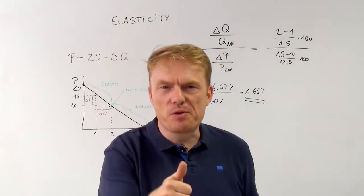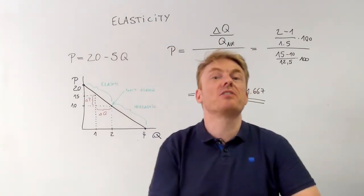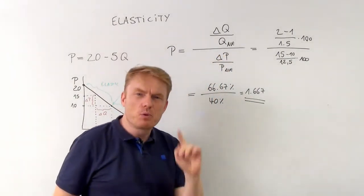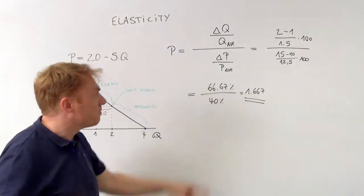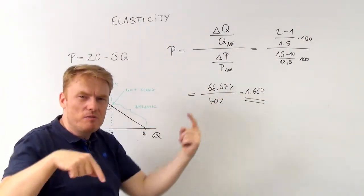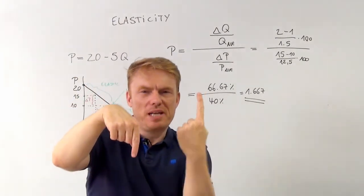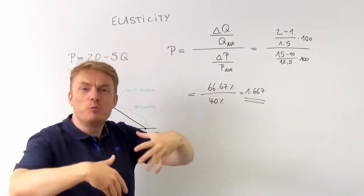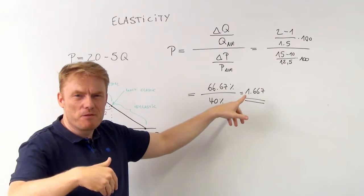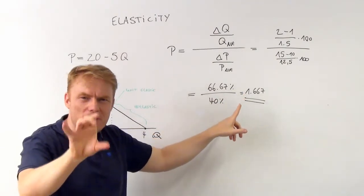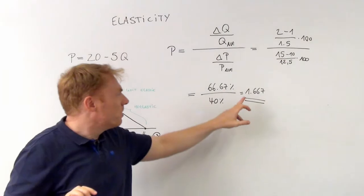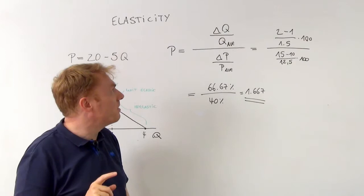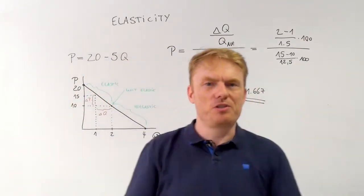You have to understand how to calculate the price elasticity and how to interpret the number. Just keep in mind it's all negative — if the price goes down, the quantity demanded goes up. To be honest, it would be better to put a minus sign in front of it, but we don't care too much about the sign. We just care about the amount — the number itself — but it is negative because the price goes down and the quantity goes up.